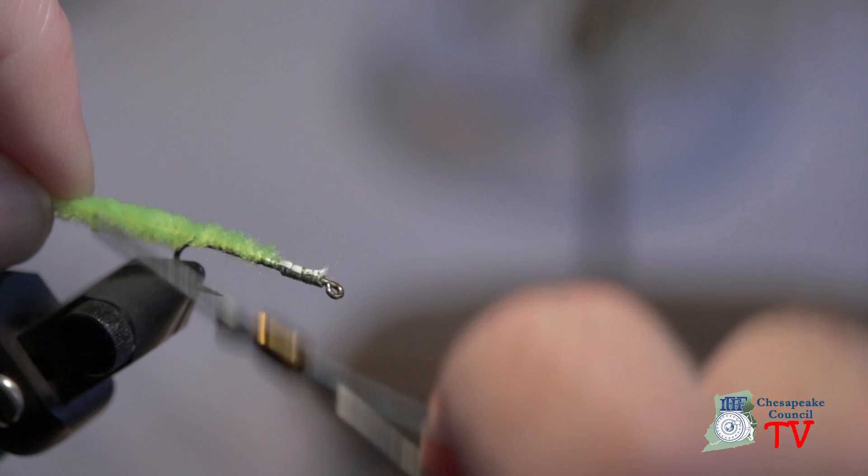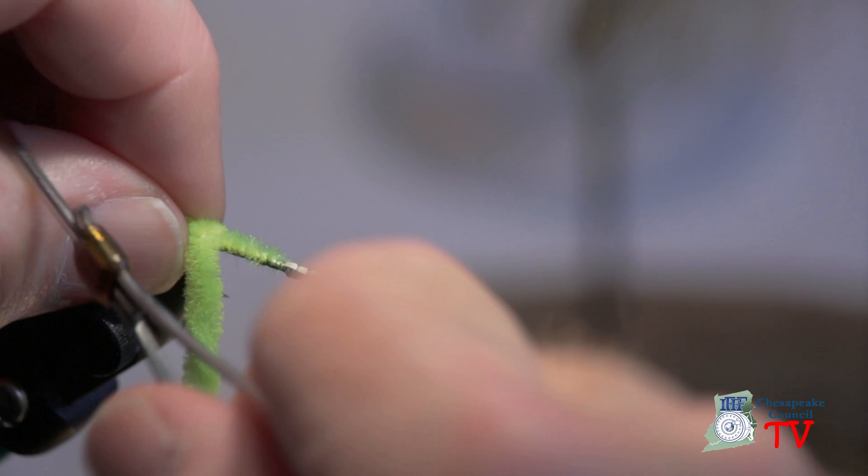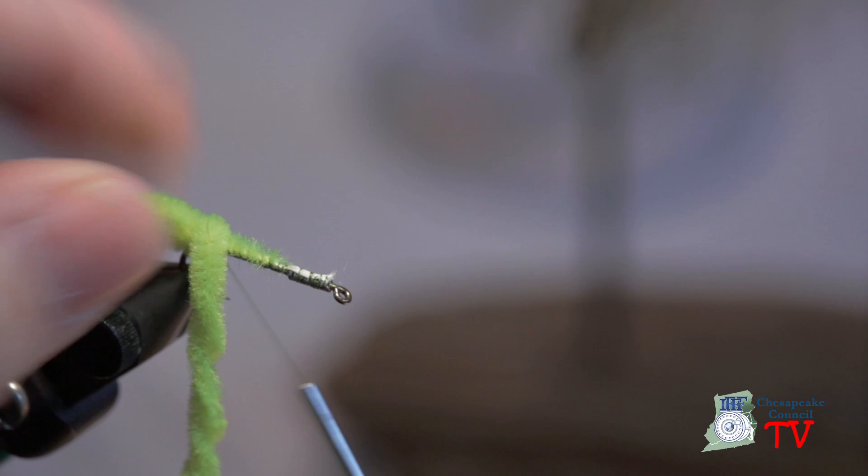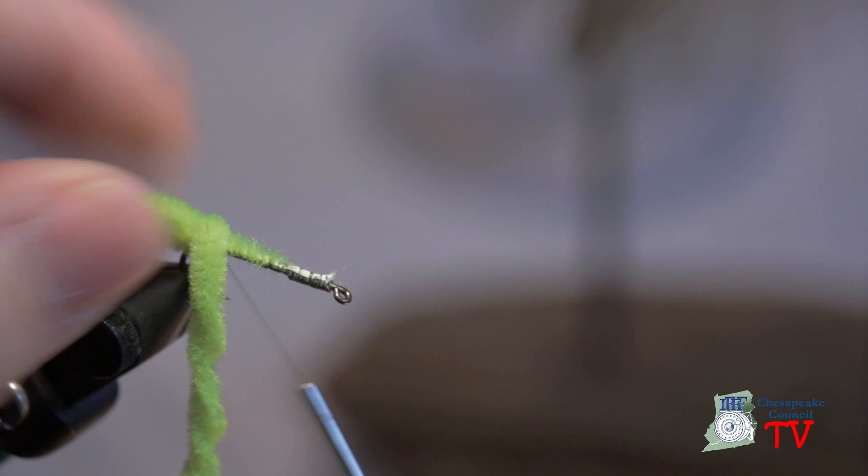When you get to just before the bend of the hook, take two or three wraps. Anchor it. Make a loop about the size and diameter of a pencil eraser. You bring it in like that.